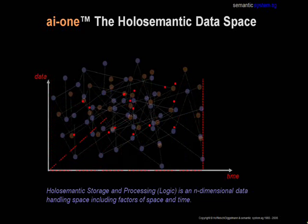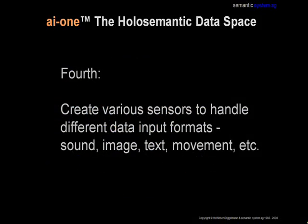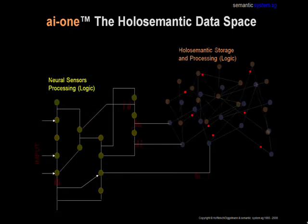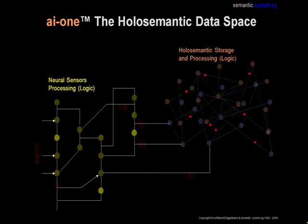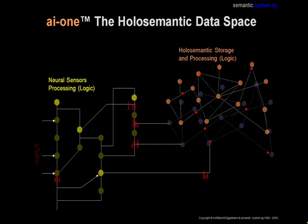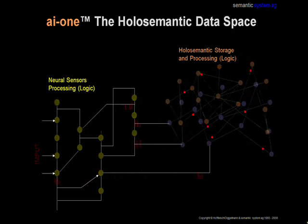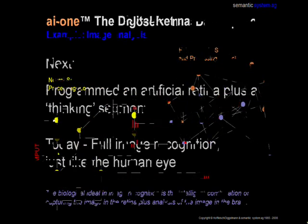Our fourth step was to create various sensors to handle the different data input formats such as sound, image, text, movement, etc. This animation shows the communication between the input sensors and the holosemantic storage and processing logic. The input sensors are usually calibrated to the kind of input signal like image, sound, movie, etc. Also here, the neural code is the key to understand this communication.